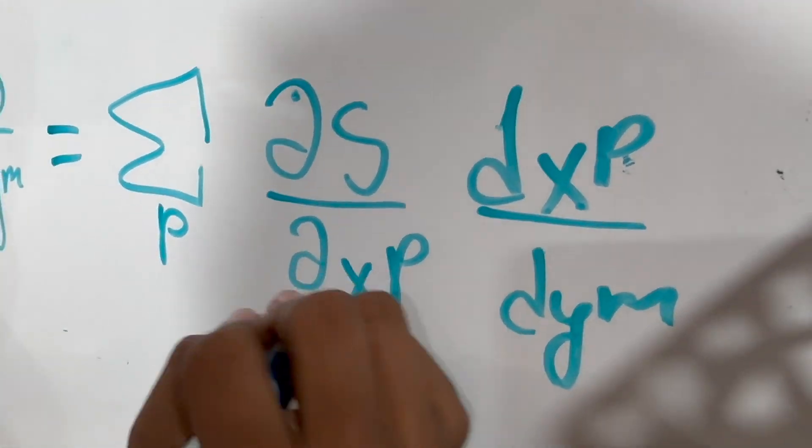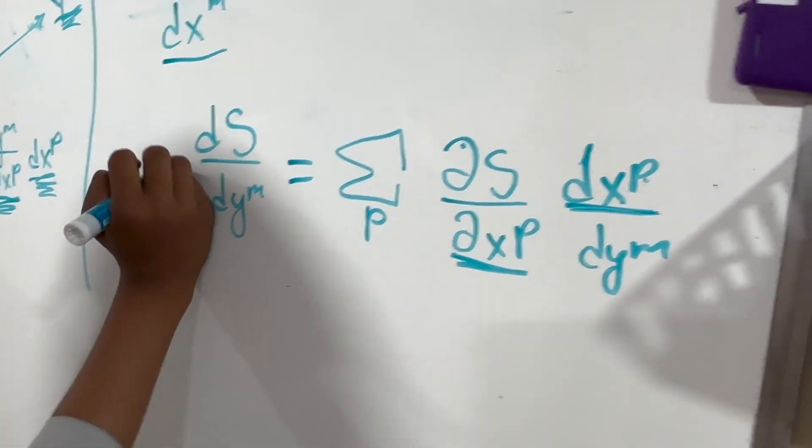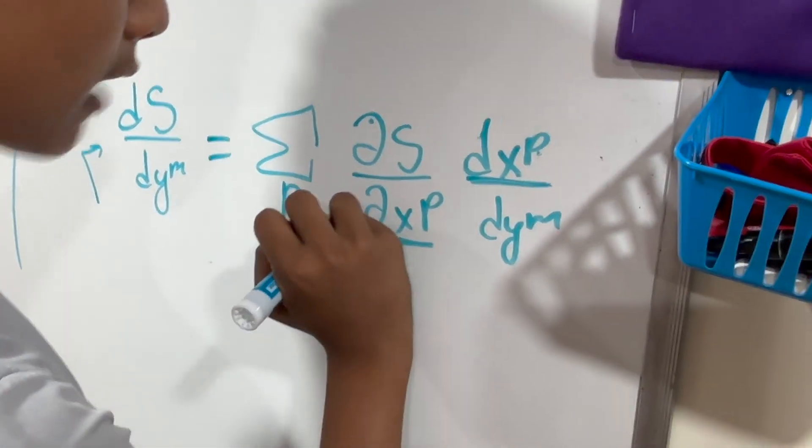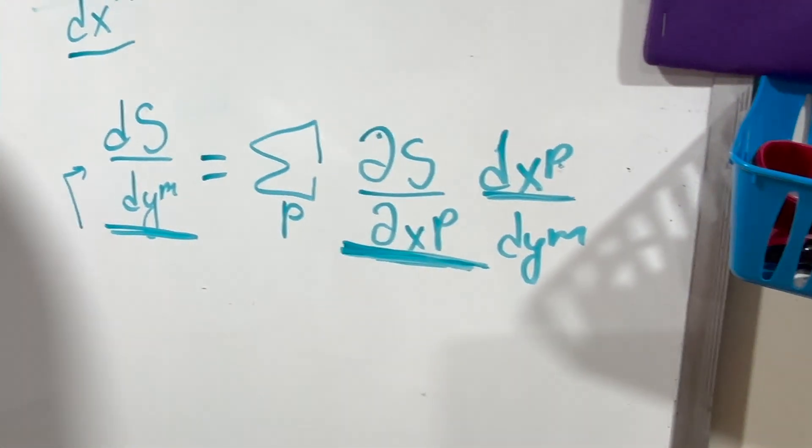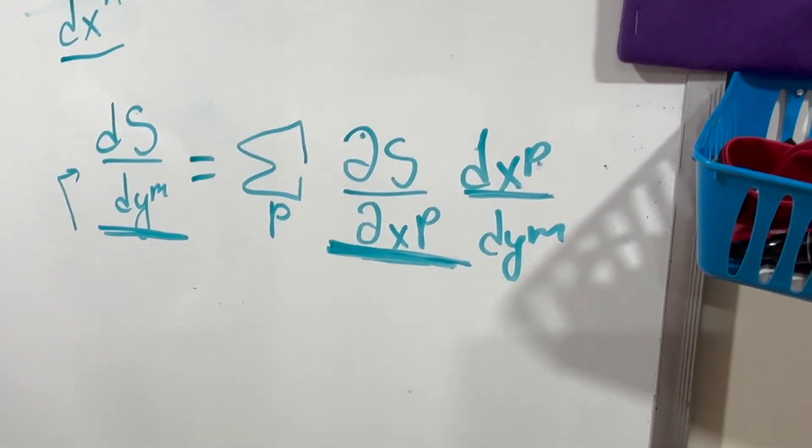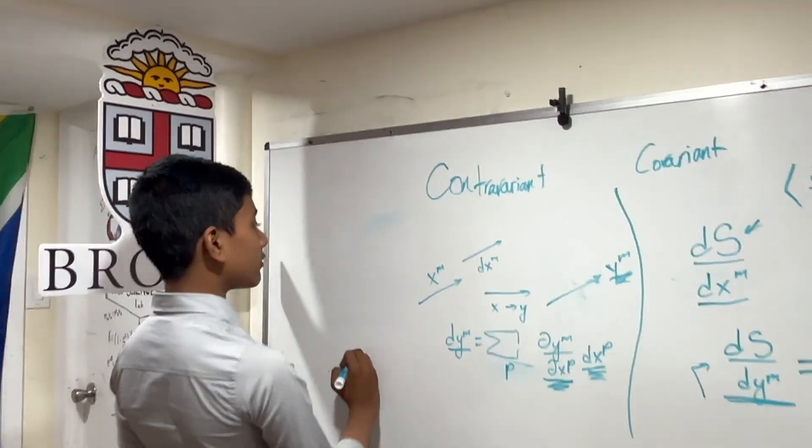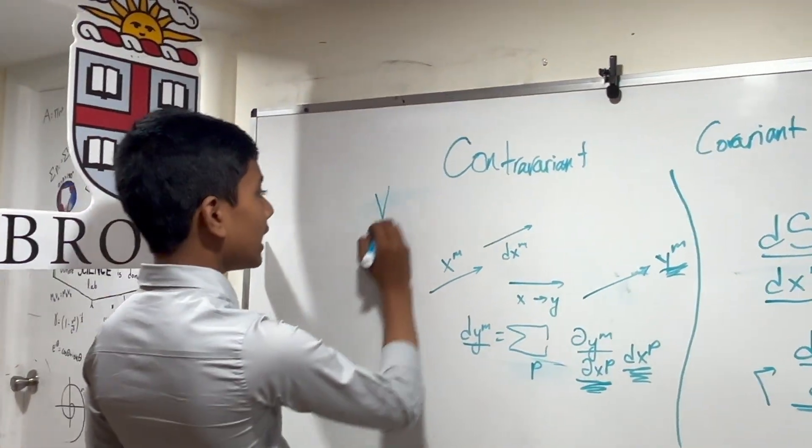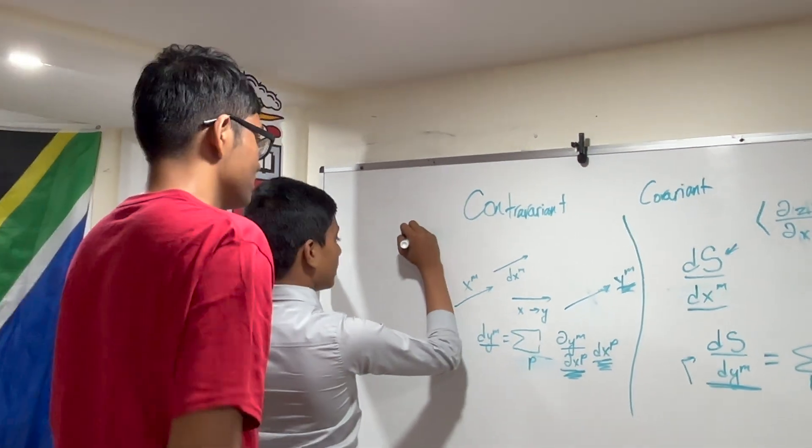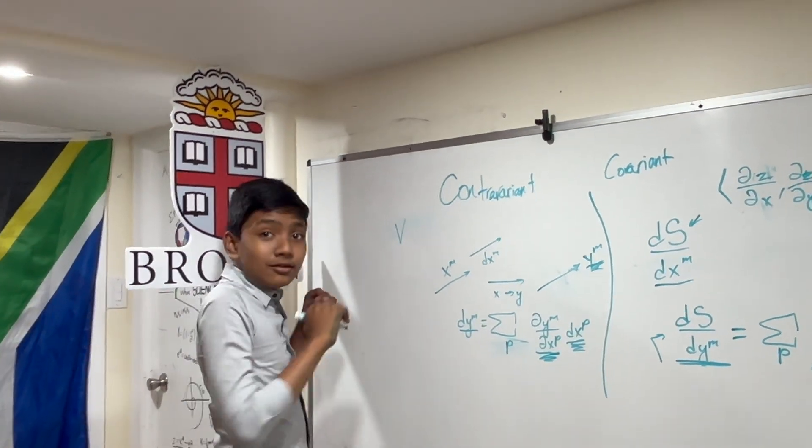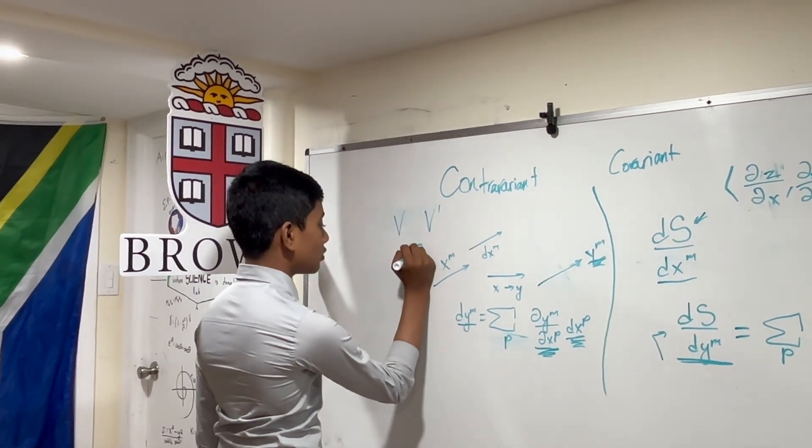So we get partial s partial x^p dx^p dy^m. Remember, over here, these summation variables have to disappear in the final product. So we've got our previous covariant here, and our new covariant, after transforming right over here. So let's generalize this outside of y and x. So let's say our old reference frame here was v, and our new reference frame, our old tensor was v, and our new tensor is v' once we change reference frames from x to y.